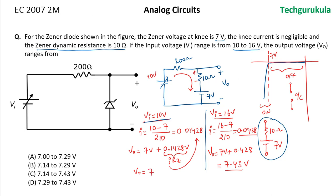So when the input voltage is changing from 10 to 16 volts, the output voltage will be changing from 7.14 to 7.43 volts. So the answer is option C.